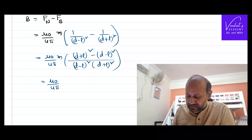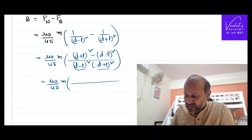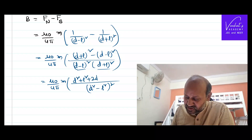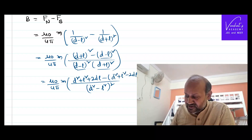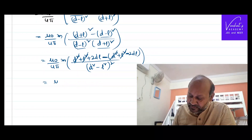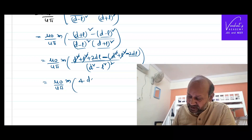The denominator (d − l)²(d + l)² equals (d² − l²)². Expanding the numerator: (d² + l² + 2dl) − (d² + l² − 2dl) — the d² terms cancel, the l² terms cancel, and we are left with 4dl. So the numerator is 4dl.